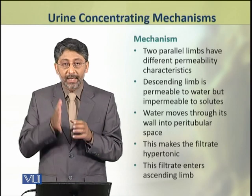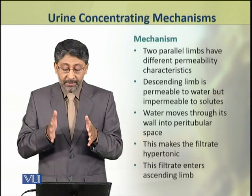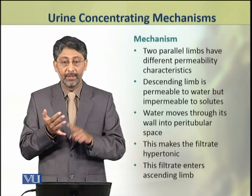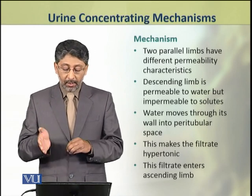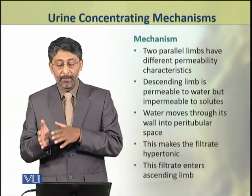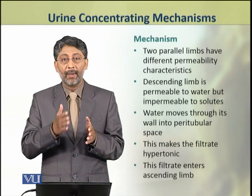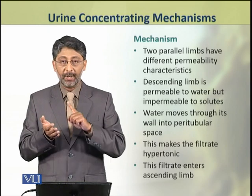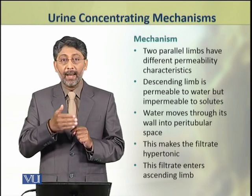Now we shall discuss the mechanism of counter current multiplication. The two parallel limbs of the loop of Henle have different permeability characteristics. The descending limb is permeable to water but impermeable to solutes. Water moves through its wall out into the peritubular space. As a result, the filtrate in it becomes hypertonic. This hypertonic filtrate then enters the ascending limb.